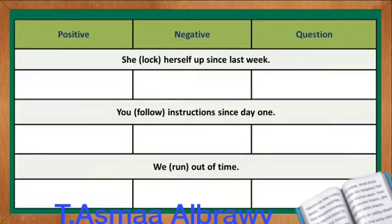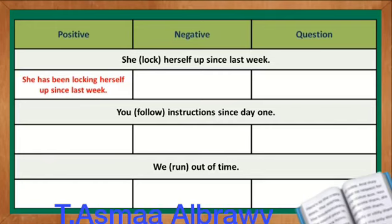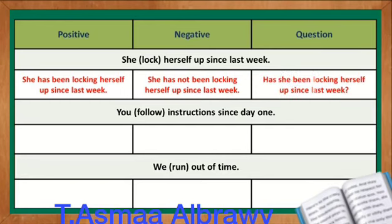She locked herself up since last week. The verb is lock. The correct positive statement is: She has been locking herself up since last week. The negative statement is: She has not been locking herself up since last week. And the question is: Has she been locking herself up since last week?